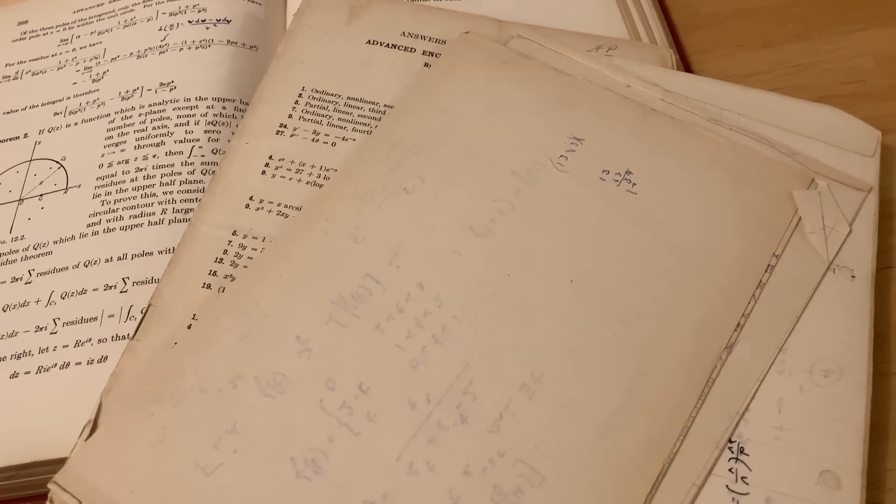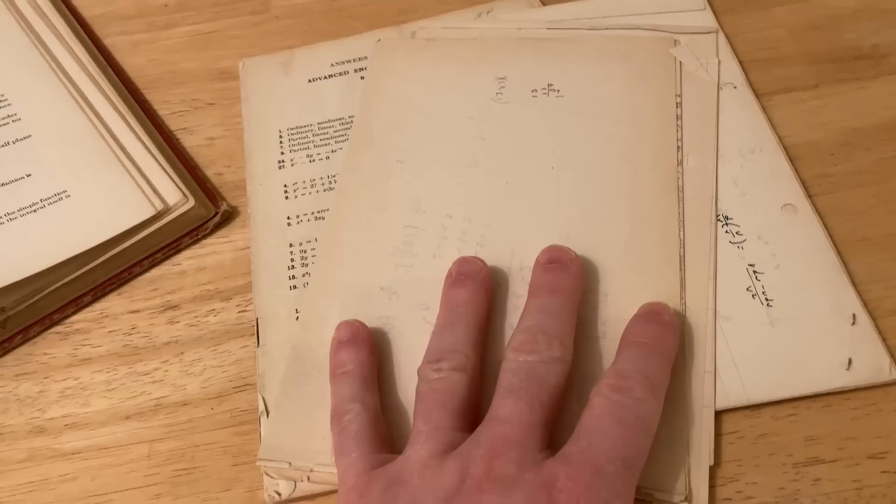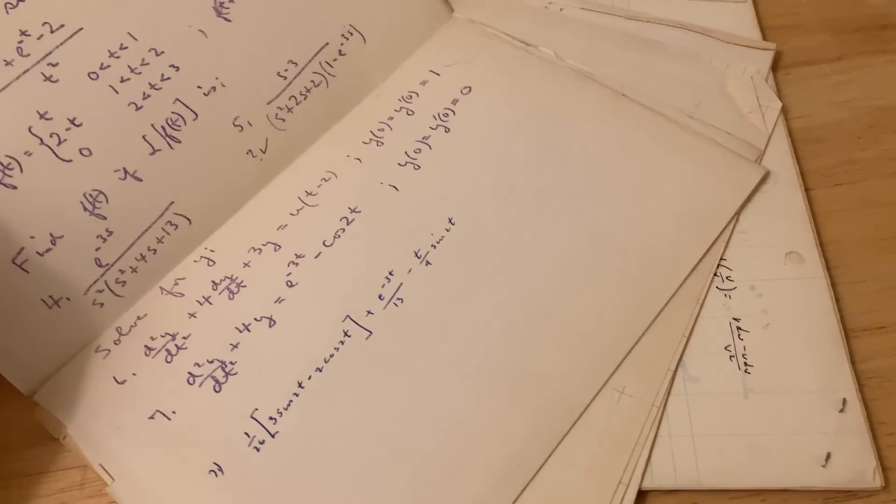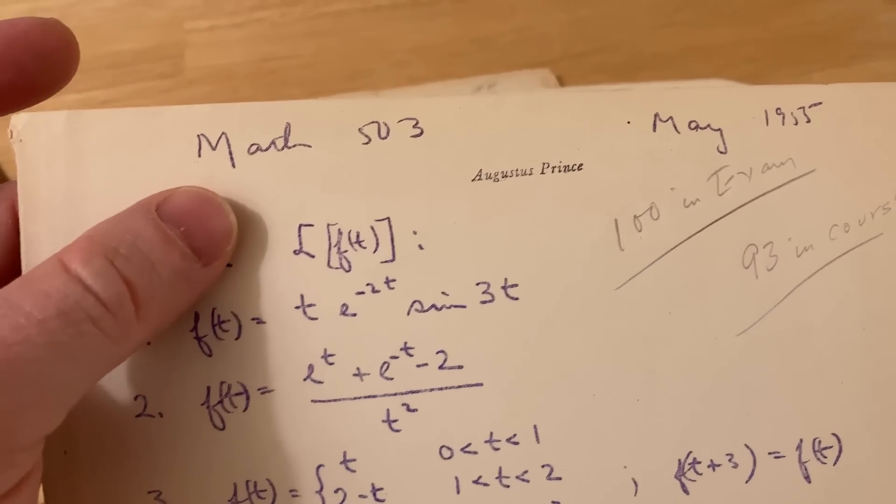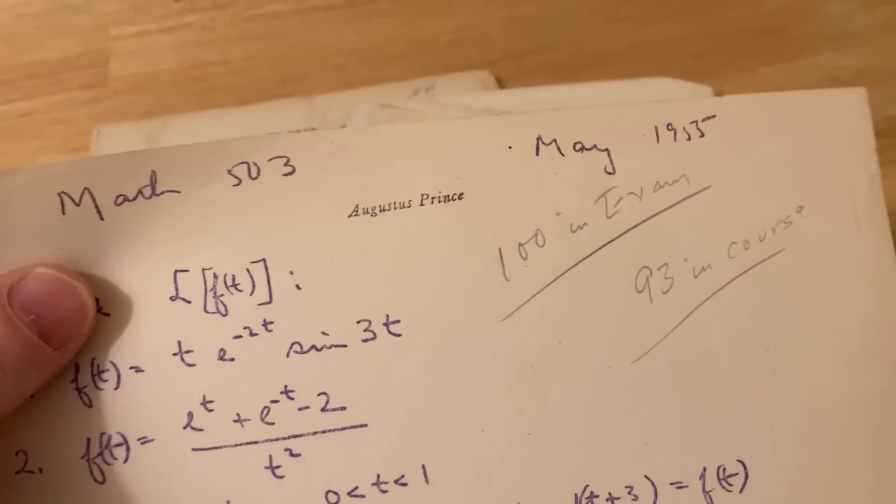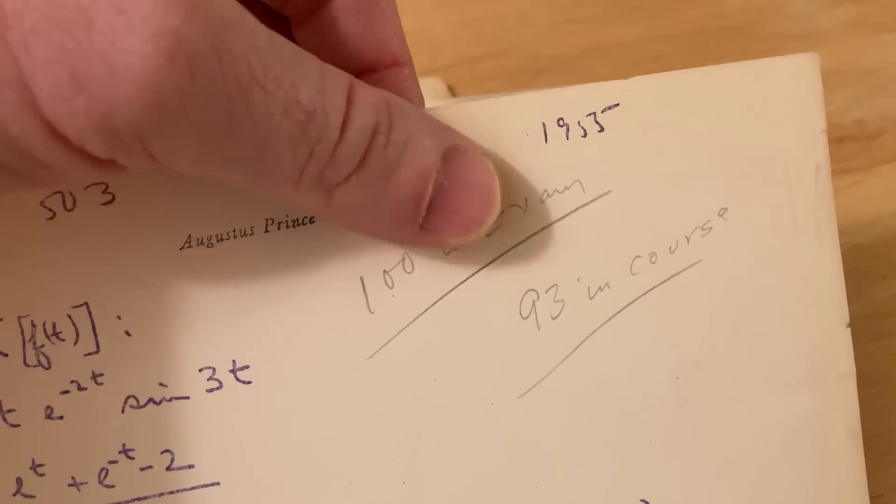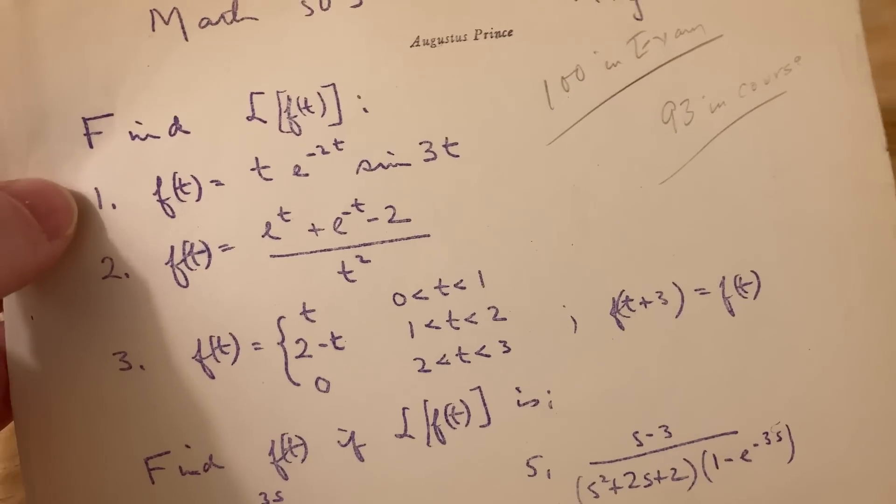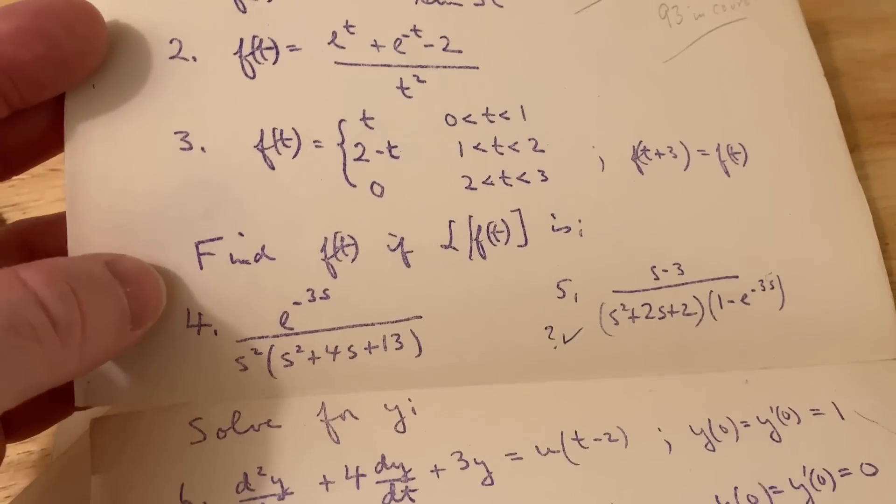Let's take a look at some of the stuff that came with this book, which is actually super interesting. These are papers that I found inside the book. This appears to be some type of exam. It says Math 503, Augustus Prince, May 1955, and that says 100 in exam. This guy was no joke. 93 in course.